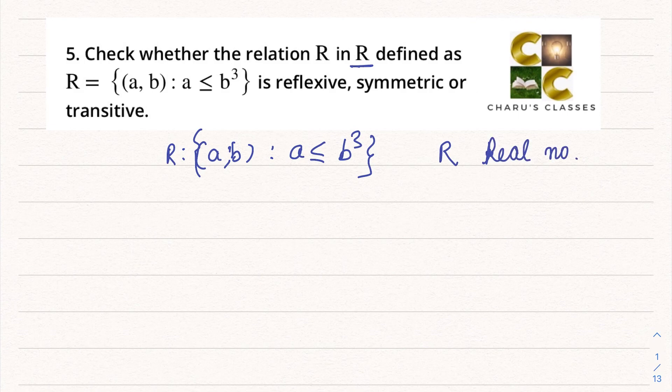Now in real numbers, we have integers, whole numbers, natural numbers, rational numbers, irrational numbers — all come. So to check whether it's reflexive, symmetric or transitive, we have to check the subtype number here.